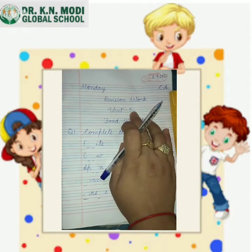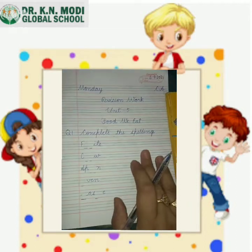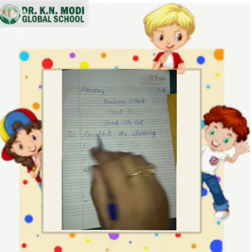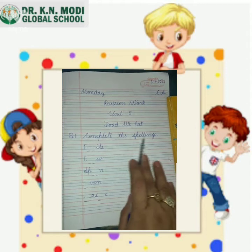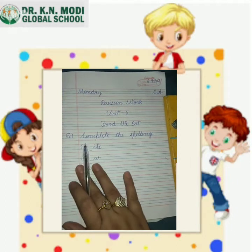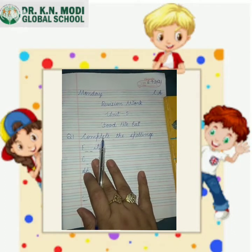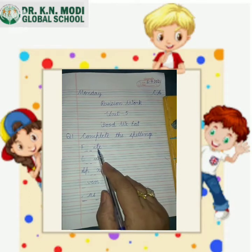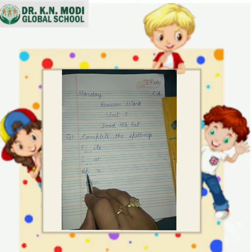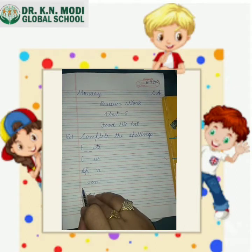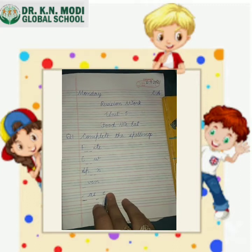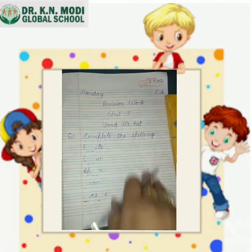What you have to do: you have to learn Unit 5 and do these questions by yourself. Question number one is complete the spellings. These are the missing letters you have to fill with correct alphabets to make a proper meaning. F-I-T-S-C-W-S-P-N dash V-E-N, again dash A-S-E. You have to do this by yourself.